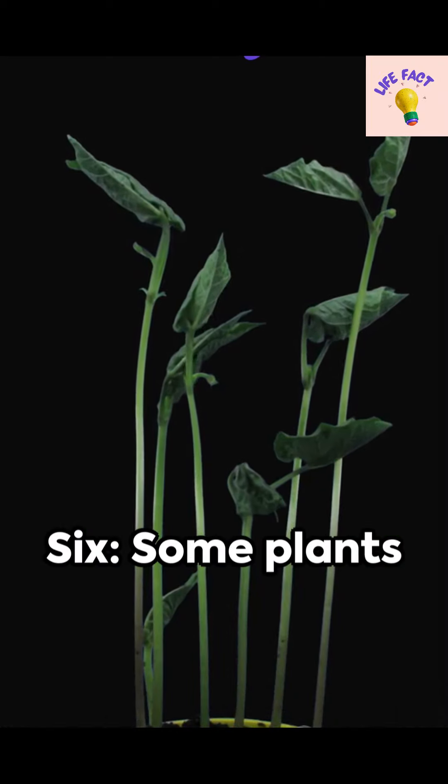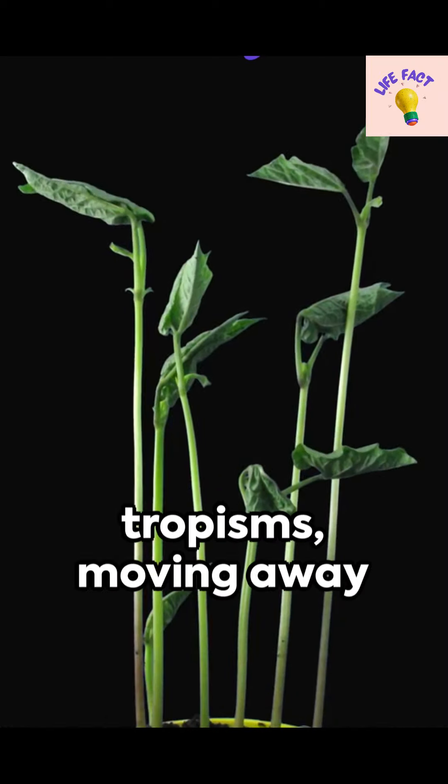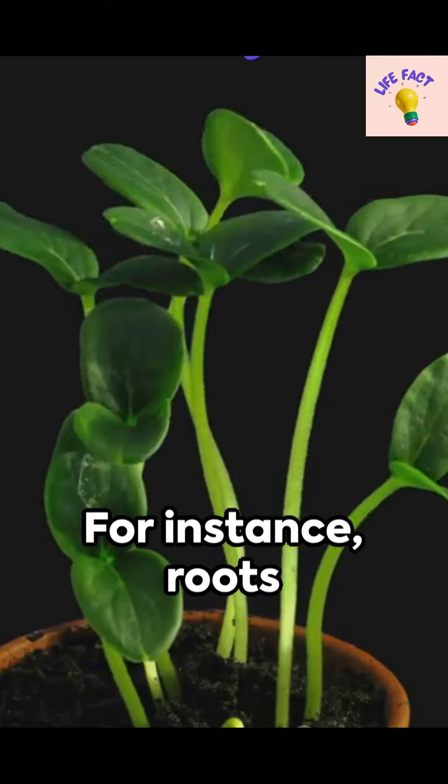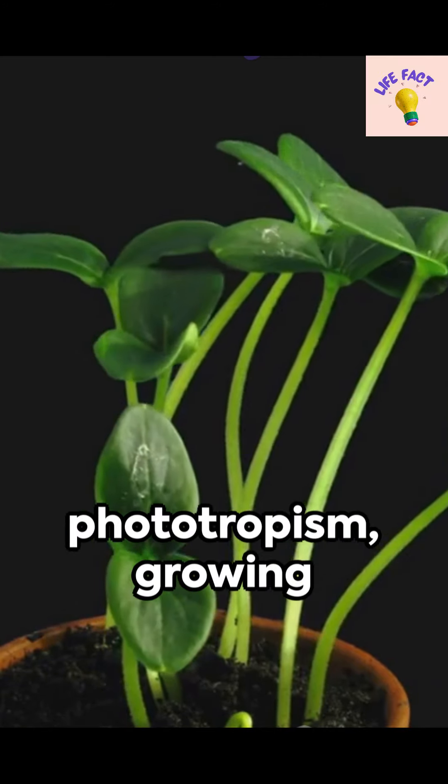Six: Some plants exhibit negative tropisms, moving away from certain stimuli. For instance, roots show negative phototropism, growing away from light.